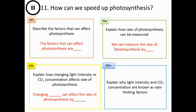Now for our write and fade phase. Describe the factors that can affect photosynthesis. Explain how the rate of photosynthesis can be measured. Explain how a change in light intensity or CO2 concentration affects the rate of photosynthesis. Explain why light intensity and CO2 concentration are known as rate-limiting factors. Give yourself 10 to 15 minutes on this. You can look back in the video if you're not 100% sure of anything. Pause this slide now.